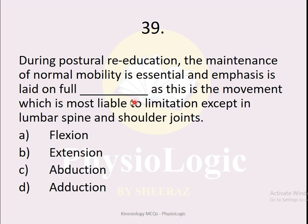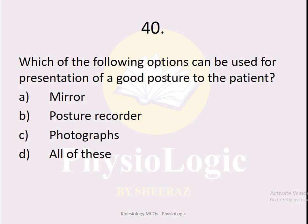MCQ number 39: During postural re-education, the maintenance of normal mobility is essential and the emphasis is laid on full — this is the movement most liable to limitation except in the lumbar spine and shoulder joints. The correct option is extension. The main focus during postural re-education is on extension. MCQ number 40: Which options can be used for presentation of good posture to the patient? Options are mirror, posture recorder, photographs, or all of these. The correct option is all of these.